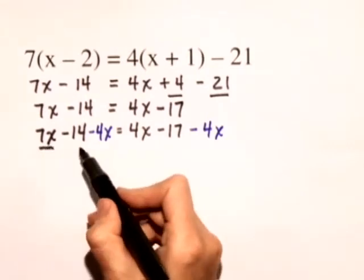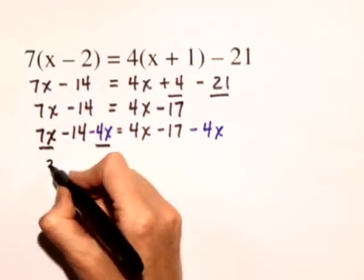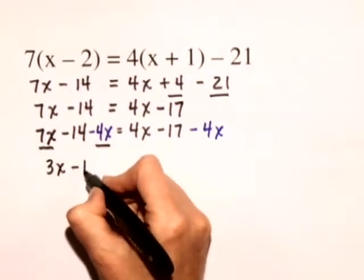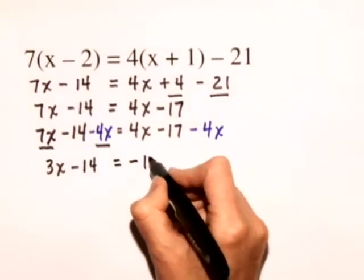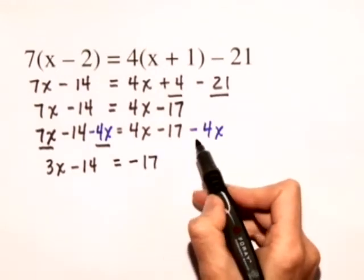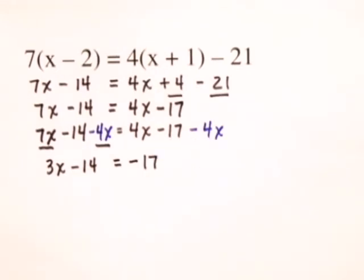On the left hand side 7x minus 4x gives us 3x and we have minus 14 is equal to, on the right hand side we just have negative 17 since the 4x minus 4x adds to 0.